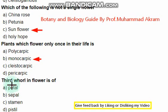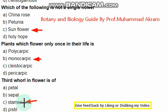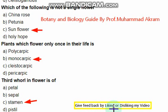The next question: the third whorl in a flower is called petal? No, it's second. Sepals? No, it's first. Stamens? Yes — this is the third whorl in a flower. The right option is stamens. Don't forget to give feedback by liking or disliking my video.